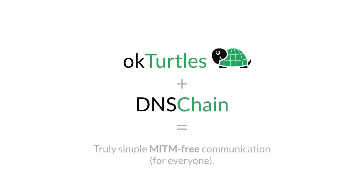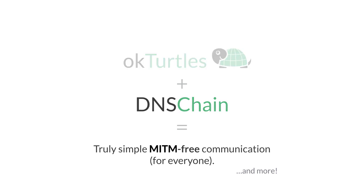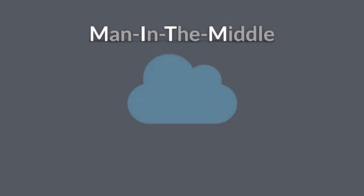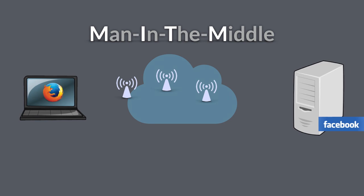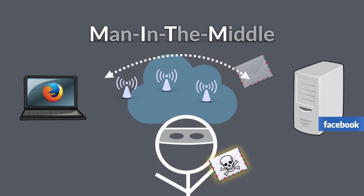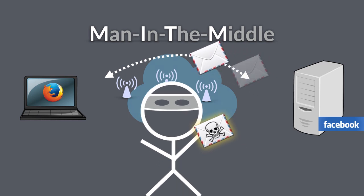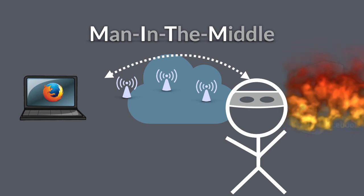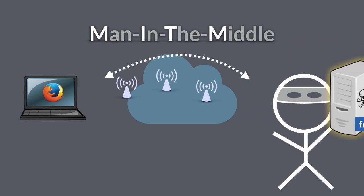Together, they make man-in-the-middle free communication possible for everyone. A man-in-the-middle is someone on the network who is between you and the server you're connecting to. A man-in-the-middle attack is when they spy on your connection, tamper with it, or reroute it to some entirely different place.